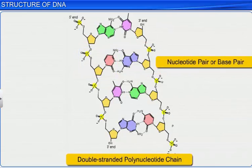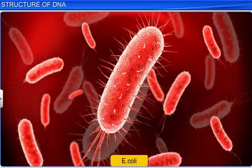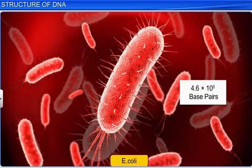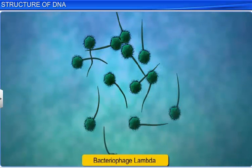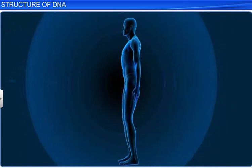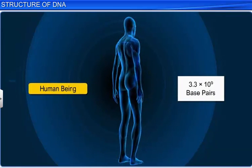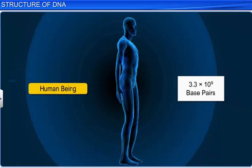A pair of nucleotides is also known as a base pair. For example, E. coli has 4.6 × 10^6 base pairs, and bacteriophage lambda has 48,502 base pairs, while the haploid content of human DNA has 3.3 × 10^9 base pairs.